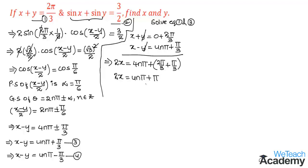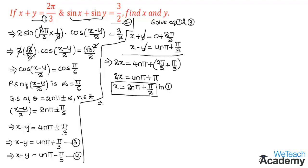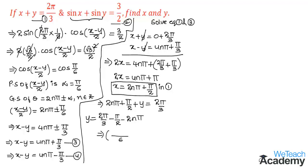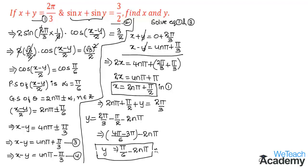Transferring 2 to the right-hand side gives x equal to 2nπ plus π/2. Substituting this into equation 1, we get 2nπ plus π/2 plus y equal to 2π/3, so y equals 2π/3 minus π/2 minus 2nπ. With common denominator 6, the numerator becomes 4π minus 3π, giving y equal to π/6 minus 2nπ, where n belongs to integers.